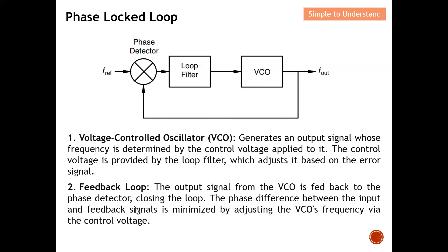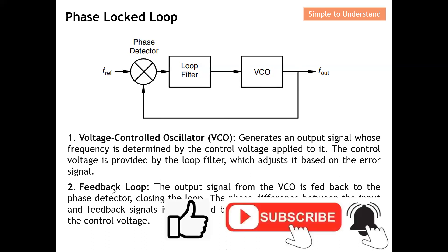So hopefully you now have a better idea of all the components that make up this Phase-Locked Loop — three main components and the mechanism of the feedback loop. On my next video, I will fully describe how all of this comes together.